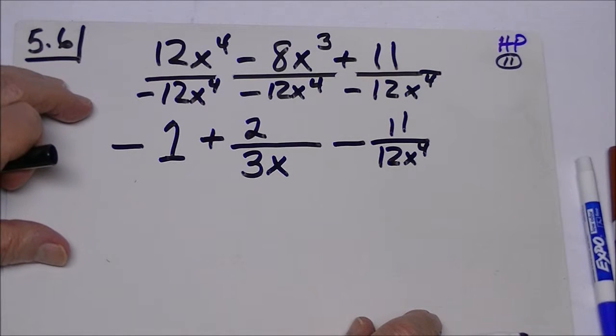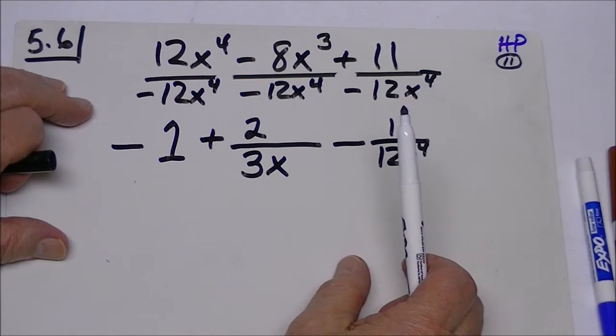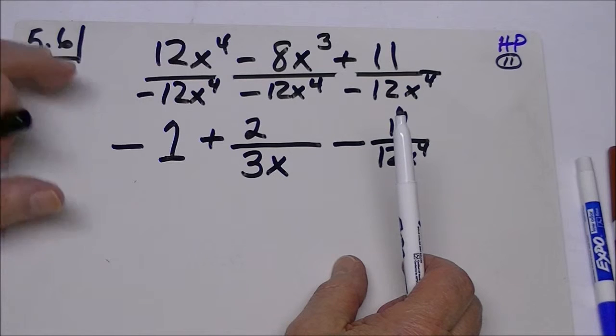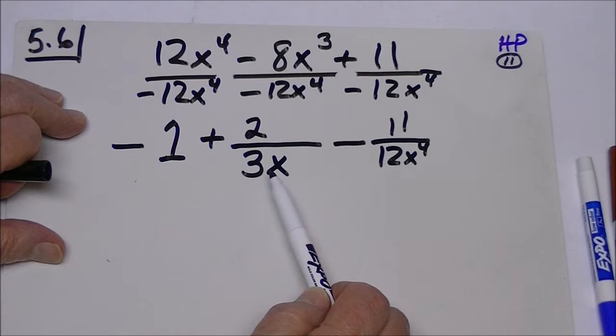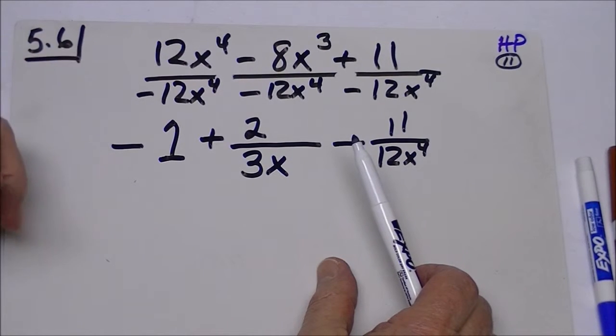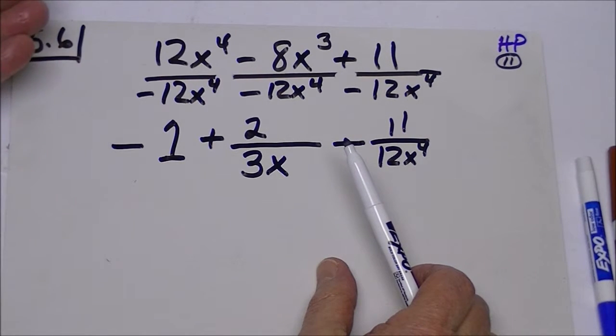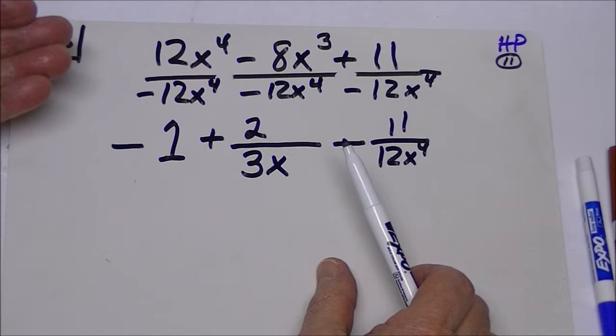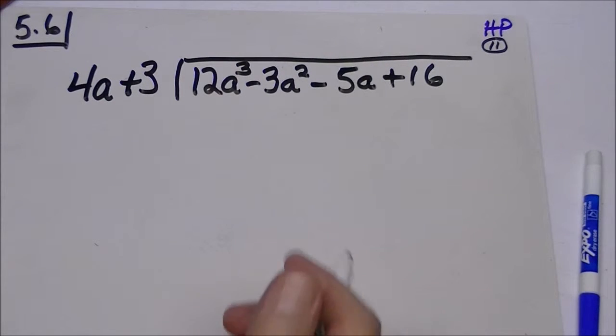Now an interesting thing about this example is that in fact this original example is not a polynomial by definition, and you might say why. Well, because it has a variable in the denominator. This is one of the qualifications of a polynomial: you cannot have a variable in the denominator and have it called that expression a polynomial. Now it is an algebraic expression, it's just not a polynomial.